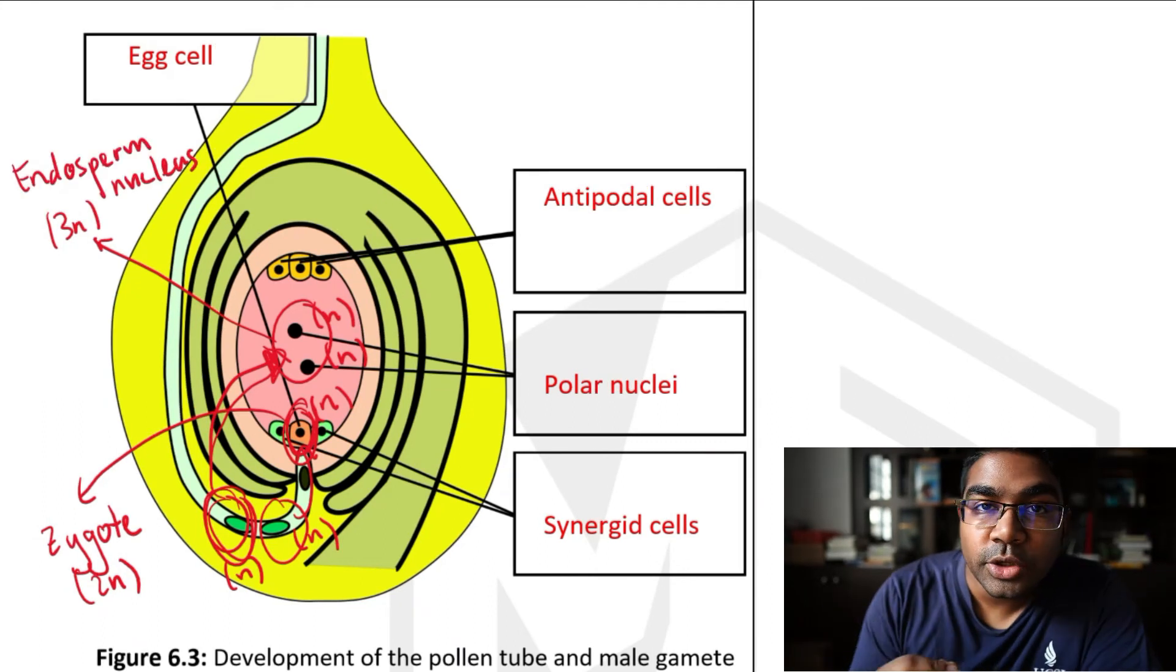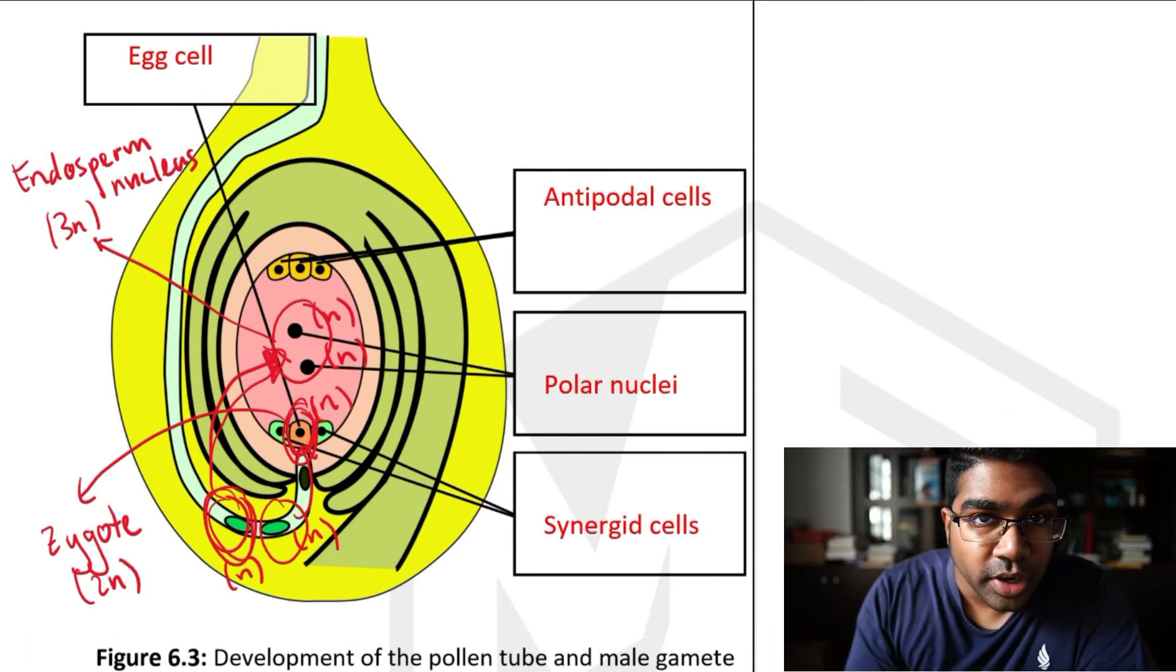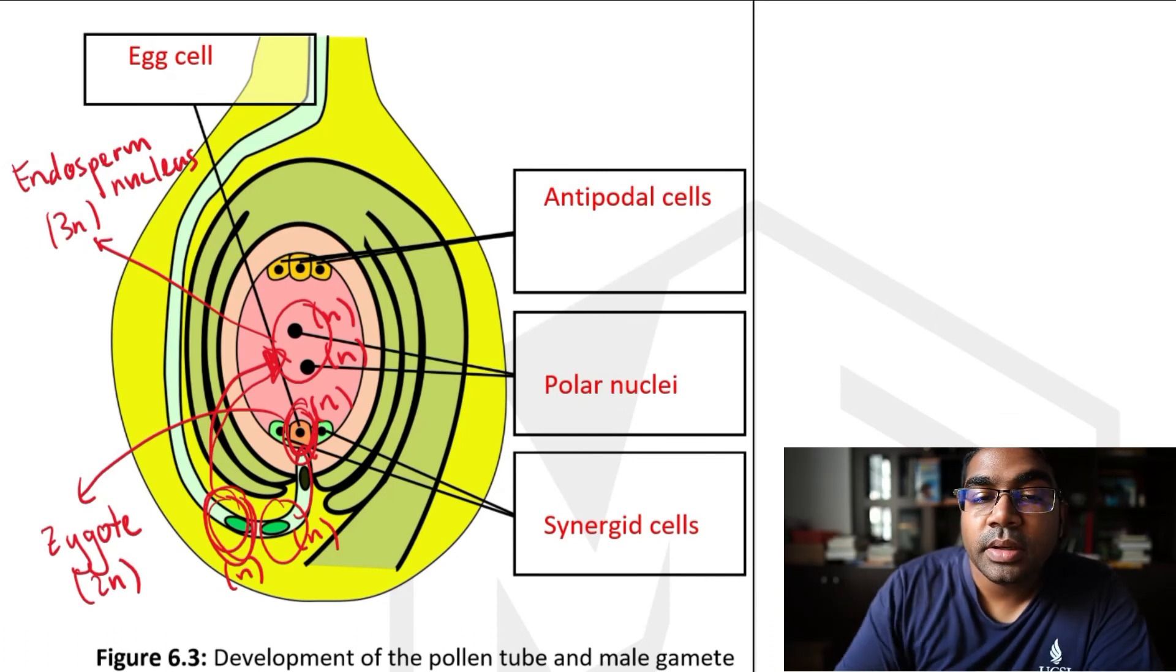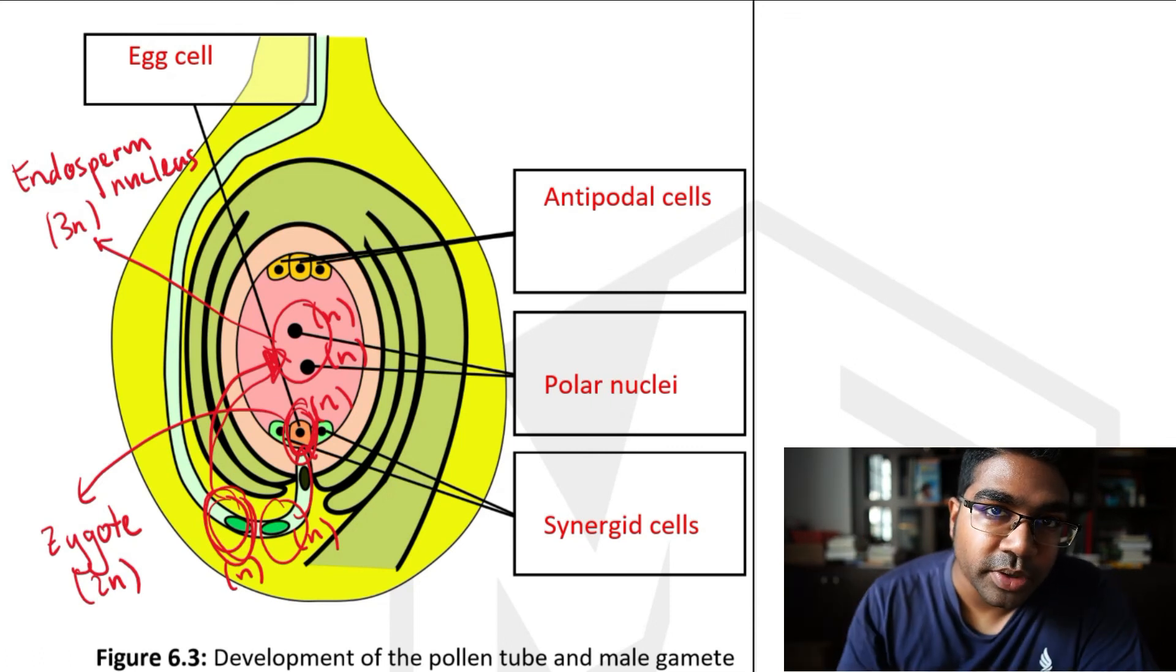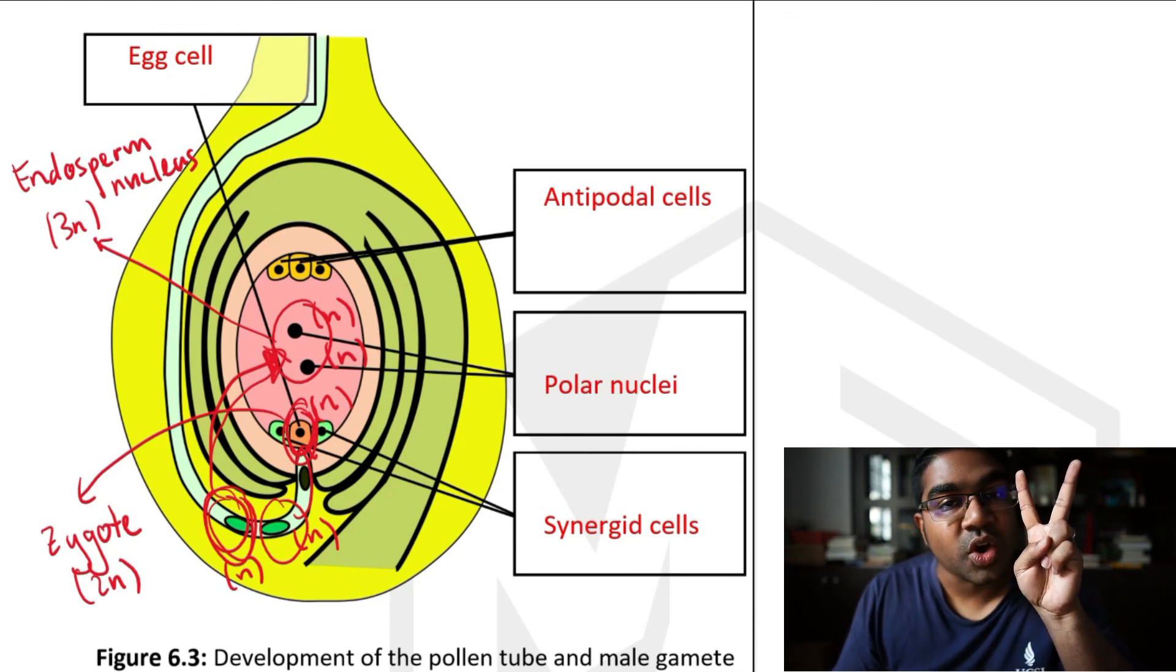And this is the endosperm nucleus. The endosperm nucleus is said to be triploid. Zygote is diploid. Endosperm nucleus is triploid. And therefore, two fertilization events have occurred.